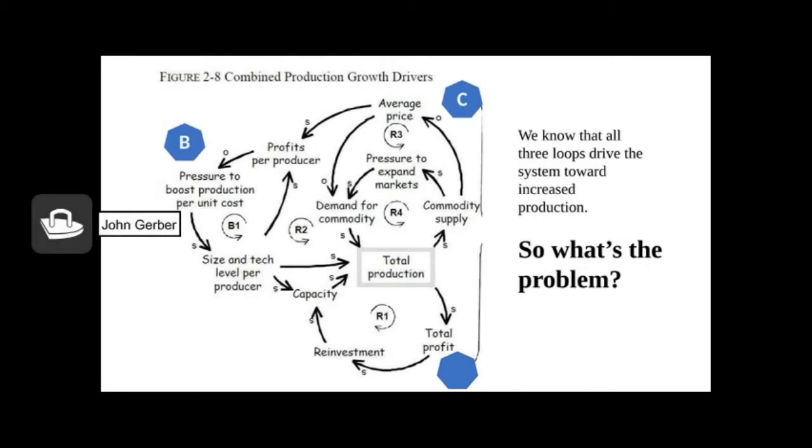We learned that the structure of the system itself is designed to increase total production and drive down prices. We can see that as commodity supply increases prices generally decrease, profits per producer decreases, and pressure to increase production increases. This drives the system to create bigger size and more technology per producer, larger farms, larger fishing boats, increasing capacity, increasing total production. As total production increases profit tends to go in the same direction which provides more investment to increase capacity once again around and around we go driving the system to increase production and drive down prices.